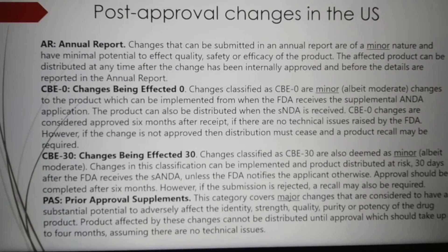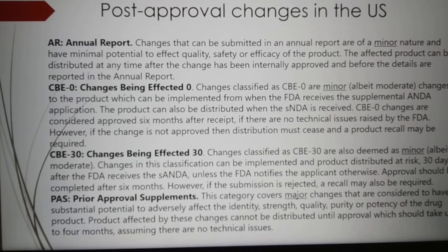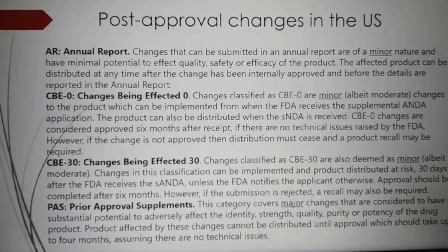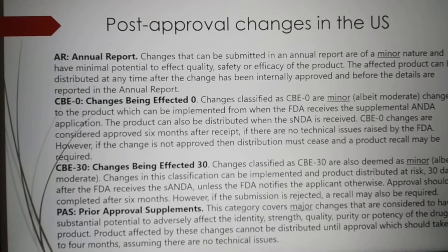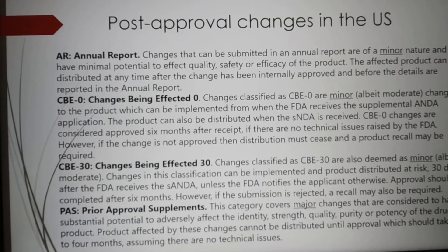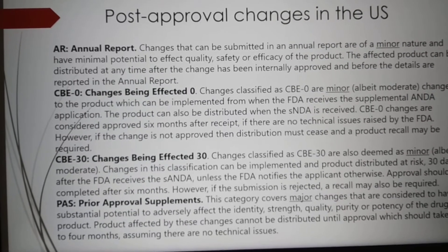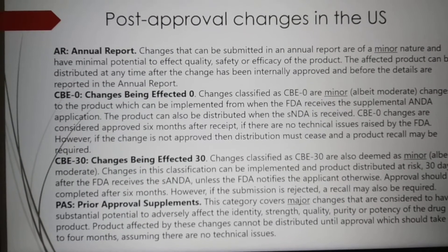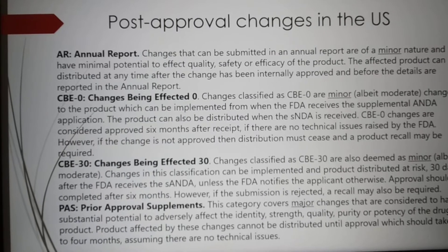The first category is Annual Report (AR). In this case, changes which are very minor in nature can be communicated to the US FDA at the end of the year. These changes are anticipated to have minimal impact on quality, safety, and efficacy of the product, and can be implemented without any prior notification to the FDA.